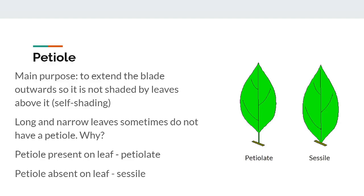If the leaf is self-shaded, its ability to perform photosynthesis will be reduced. Leaves that are long and narrow sometimes don't have a petiole, and instead the blade is attached directly to the stem. Since a purpose of a petiole is to prevent self-shading, we can guess that leaves without petioles don't have as big a problem with self-shading — and this turns out to be true, because the long and narrow leaves that lack petioles don't cast a very big shadow. Leaves with petioles are called petiolate, and leaves without petioles are called sessile.